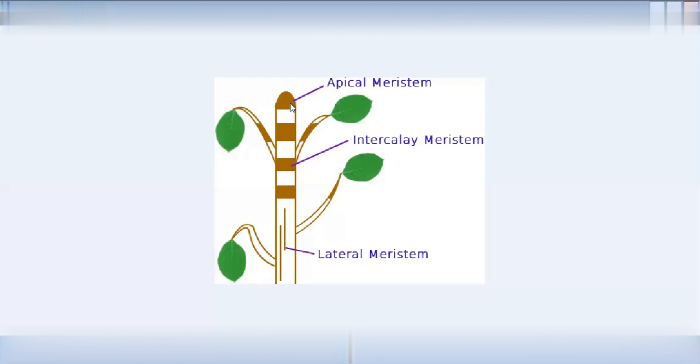If you want to develop thickness in a plant, you use lateral meristem. Vascular cambium is the best example of lateral meristem. The cells of lateral meristem are fusiform in shape — not hexagonal like typical meristematic cells. When we look at meristematic activity, the vascular cambium produces secondary phloem and secondary xylem, which helps secondary growth.